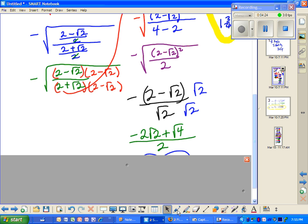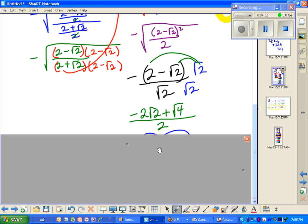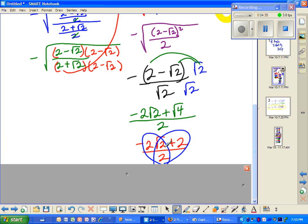And I get negative 2 square root of 2 plus square root of 4. And I get negative 2 square root of 2 plus 2 on the top over 2. I can reduce out that negative.